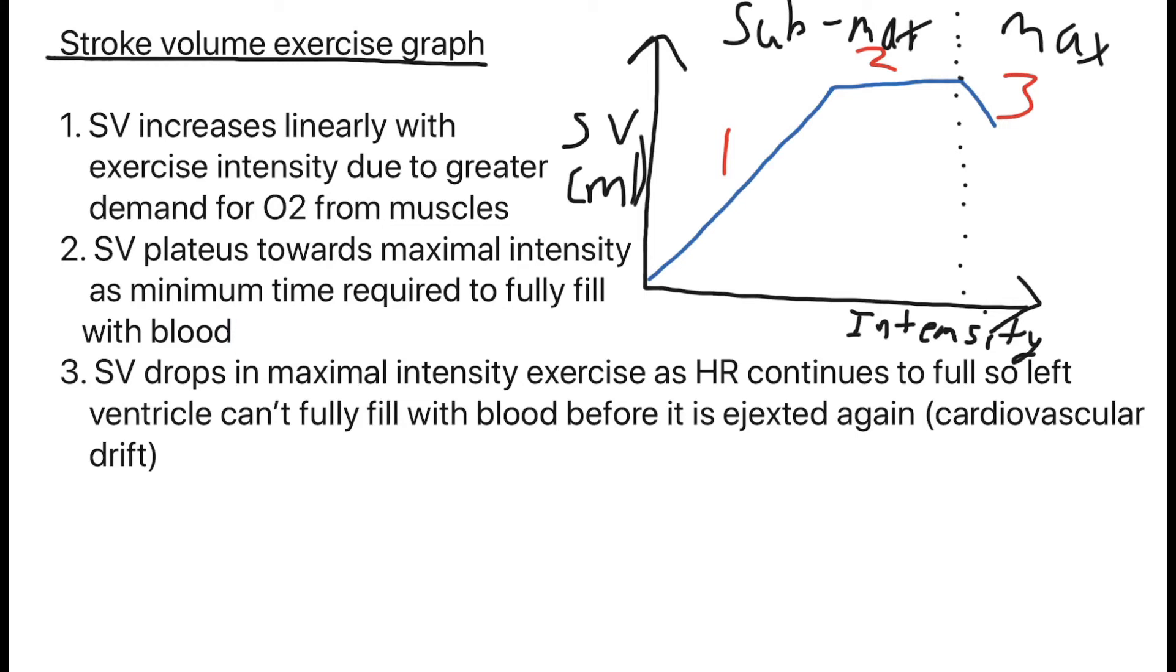Because you're going further, your heart rate continues to increase. It just keeps increasing up until your maximum heart rate, which is 220 minus your age. Because you've gone over that time, you haven't got the minimum time allowed for the left ventricle to fully fill. So stroke volume drops in maximum intensity exercise as heart rate continues to fall. The left ventricle can't fully fill with blood before it's ejected again. And that is cardiovascular drift. That's the definition you need to learn.